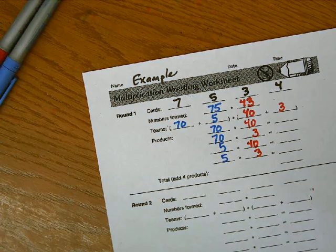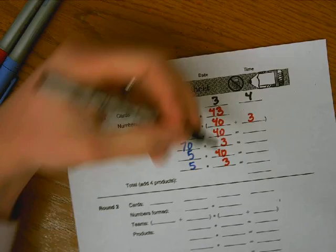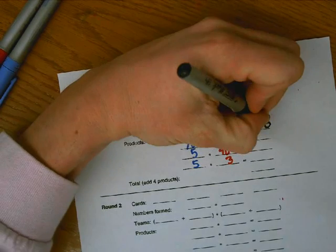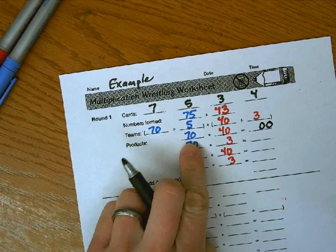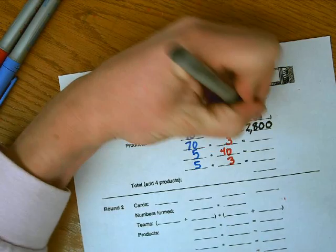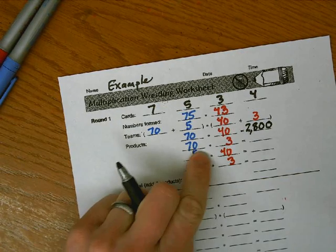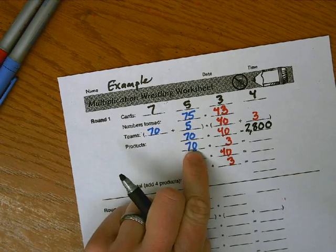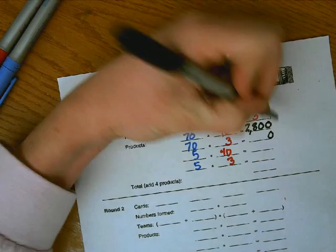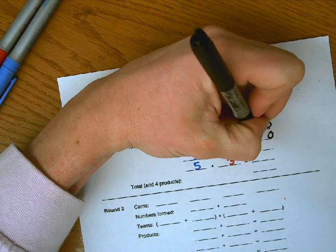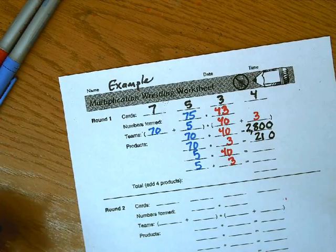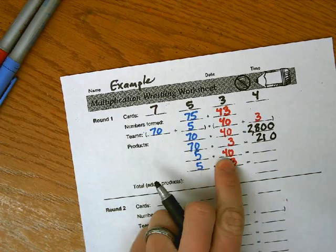So now we just have to multiply these, so we can do that. Again, I noticed two zeros, so we'll put it in the ones in the tens place. Seven times four is 2,800. After you put the 28, 70 times three. Again, there's one zero, so we'll put that in the ones place. Seven times three is 21 for a product of 210.